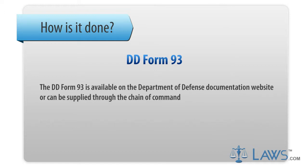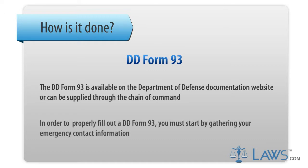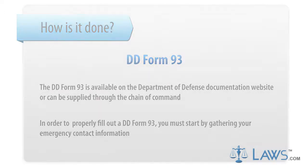The DD Form 93 is available on the Department of Defense documentation website or can be supplied through the chain of command. In order to properly fill out a DD Form 93, you must start by gathering your emergency contact information.